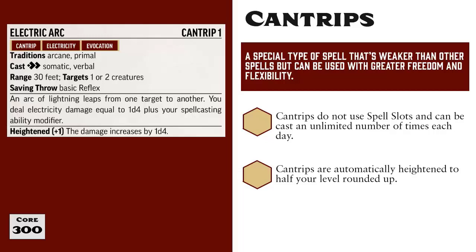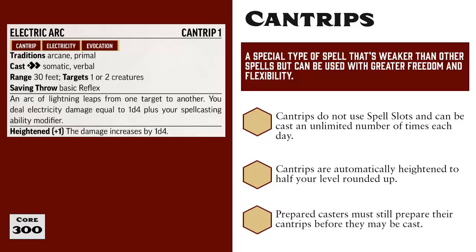For spontaneous casters, cantrips work like signature spells in that they are freely heightened. But prepared casters still need to prepare their cantrips before they can be cast. For example, a first level wizard starts with 10 cantrips in their spellbook, but each morning as part of their daily preparations, they choose 5 of those to prepare. But once they're prepared, the wizard may cast those 5 cantrips as often as they like for the rest of the day.